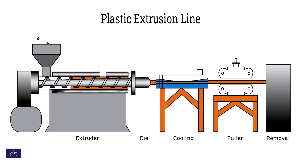This is a simple image of the extrusion machine steps: extruder, die, cooling, puller, and removal.